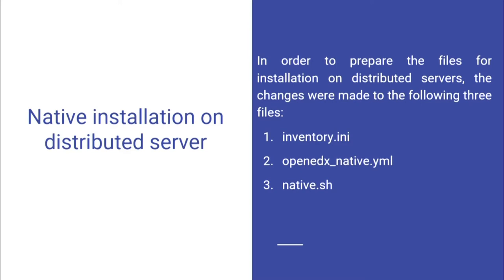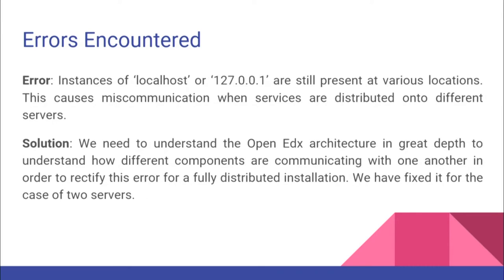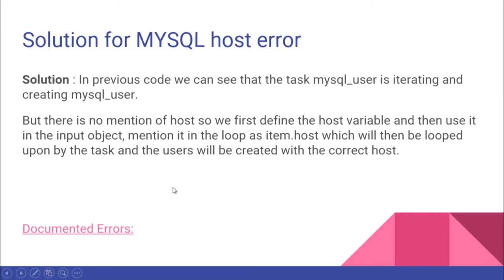In native.sh we need to make a change. This file originally consists of '-c local' and '-i localhost' by default, since all services were being installed on localhost. Now that distribution of services into servers has been specified in the inventory.ini file, we replace '-c local' and '-i localhost' with '-i inventory.ini'. There were again some errors encountered, and we have listed all of them at a linked page.